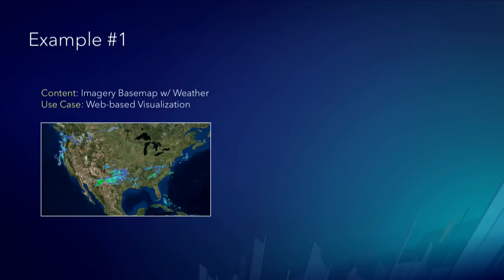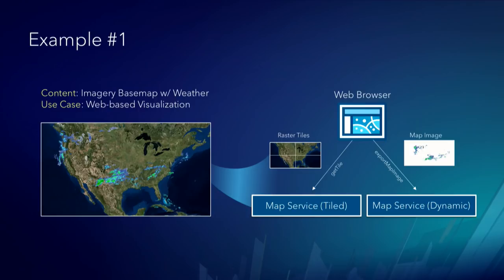Here's one example: a web-based visualization presenting weather data on imagery. I'm probably looking at two different types of services — one for the base map. This is imagery, so I can't do vector tiles. I'm going to do tiled map services for serving out raster tiles for the imagery. And then for the weather data, which is moving quickly and is fairly complex, I'm going to use dynamic map services to render that on the server. Every time the weather updates, every time I make a request, I'll get the latest weather data, and a small image will be delivered to my browser.